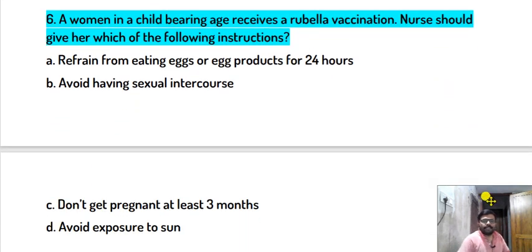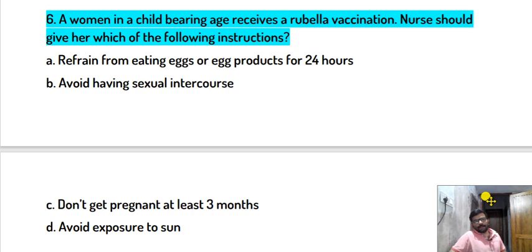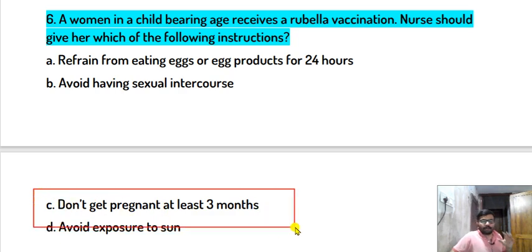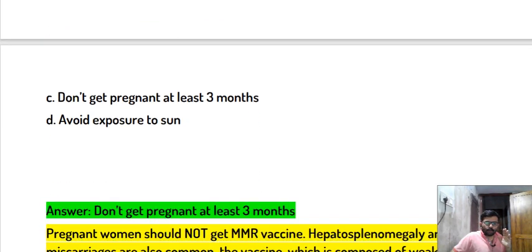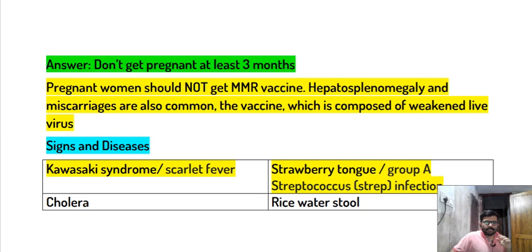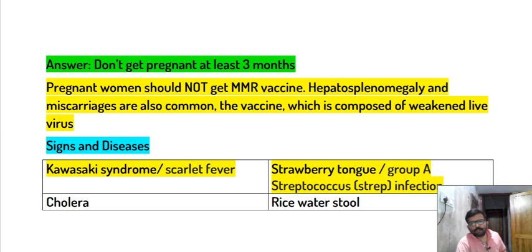A woman of childbearing age who receives a Rubella vaccination should be instructed: do not get pregnant for at least 3 months. Children and women who are already pregnant should not receive the MMR vaccine. Hepatosplenomegaly and miscarriages are common risks, as the vaccine contains a weak live virus.